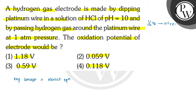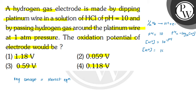We can write that here pH is given. pH is equal to 10. We can find the concentration of H⁺ because pH equals minus log₁₀ of [H⁺]. So the concentration of H⁺ will be 10 raised to the power of minus pH, which gives [H⁺] = 10⁻¹⁰.